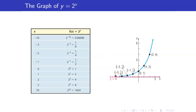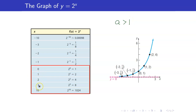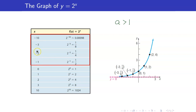Let us consider the graph of y equals 2 to the x. In this case, our base a is greater than 1. Notice that as x becomes bigger and bigger, 2 to the x becomes bigger and bigger as well — you have 2, 4, 8, and if it's 10, it's already 1,024. So as you can see, your graph increases fast. However, if x becomes more and more negative, the value of 2 to the x gets closer and closer to 0. So that's why your graph would approach the x-axis, y equals 0 — it will have a horizontal asymptote there.